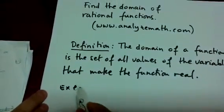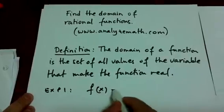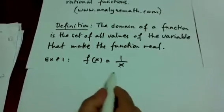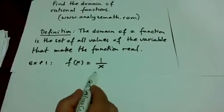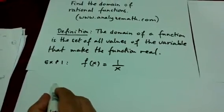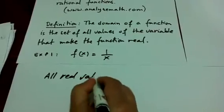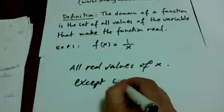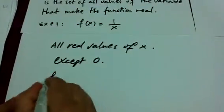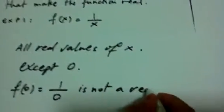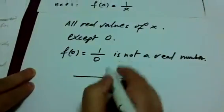Let's take Example 1: let f(x) equal one over x. For what values of x is f(x) a real number? All real values of x will make f(x) real except zero, because if x equals zero, we get one over zero, and one over zero is not a real number.